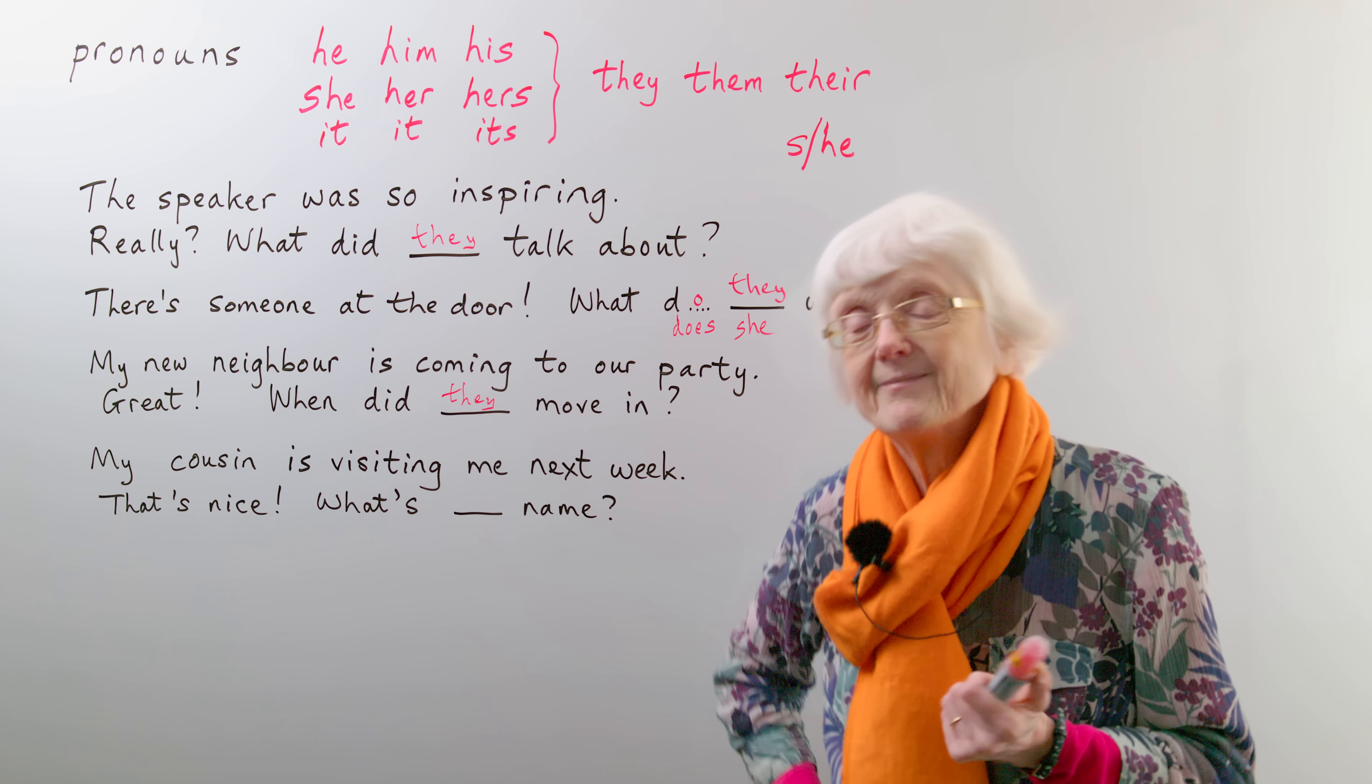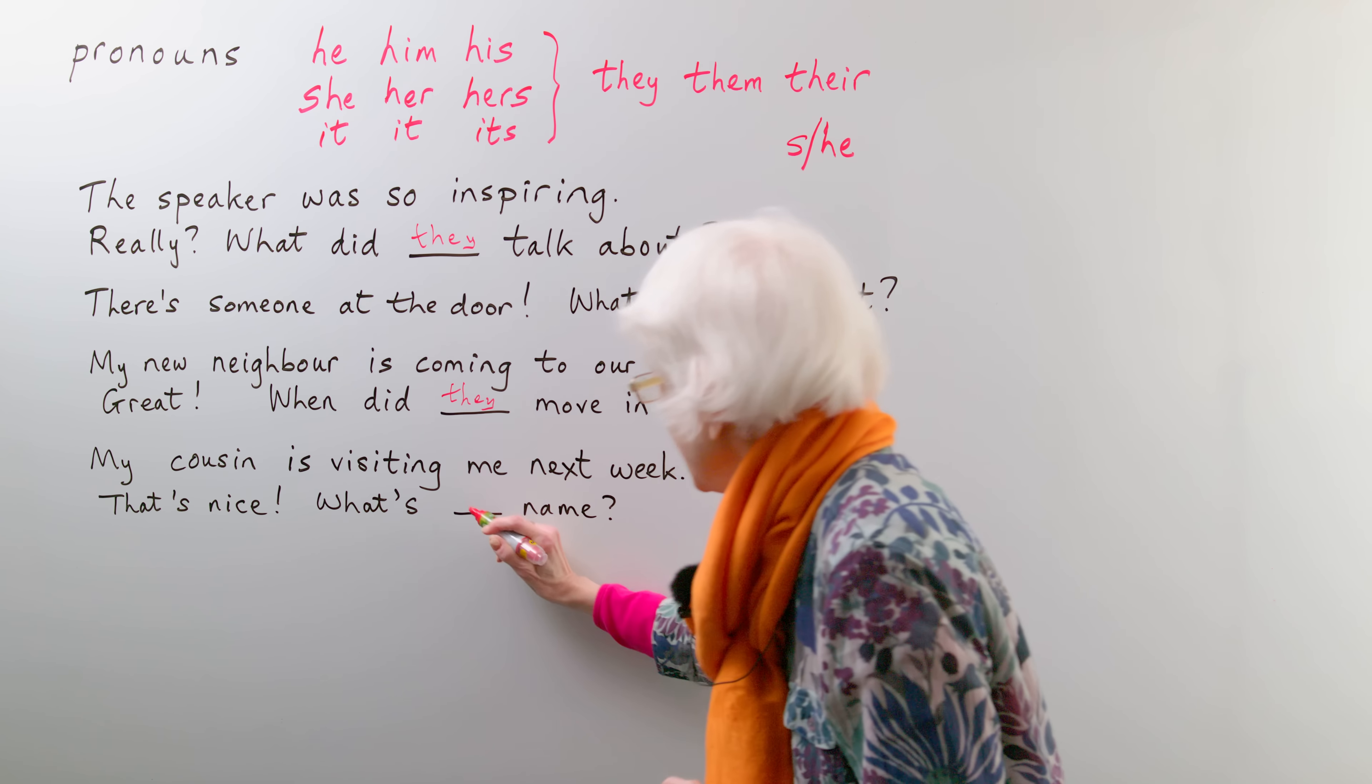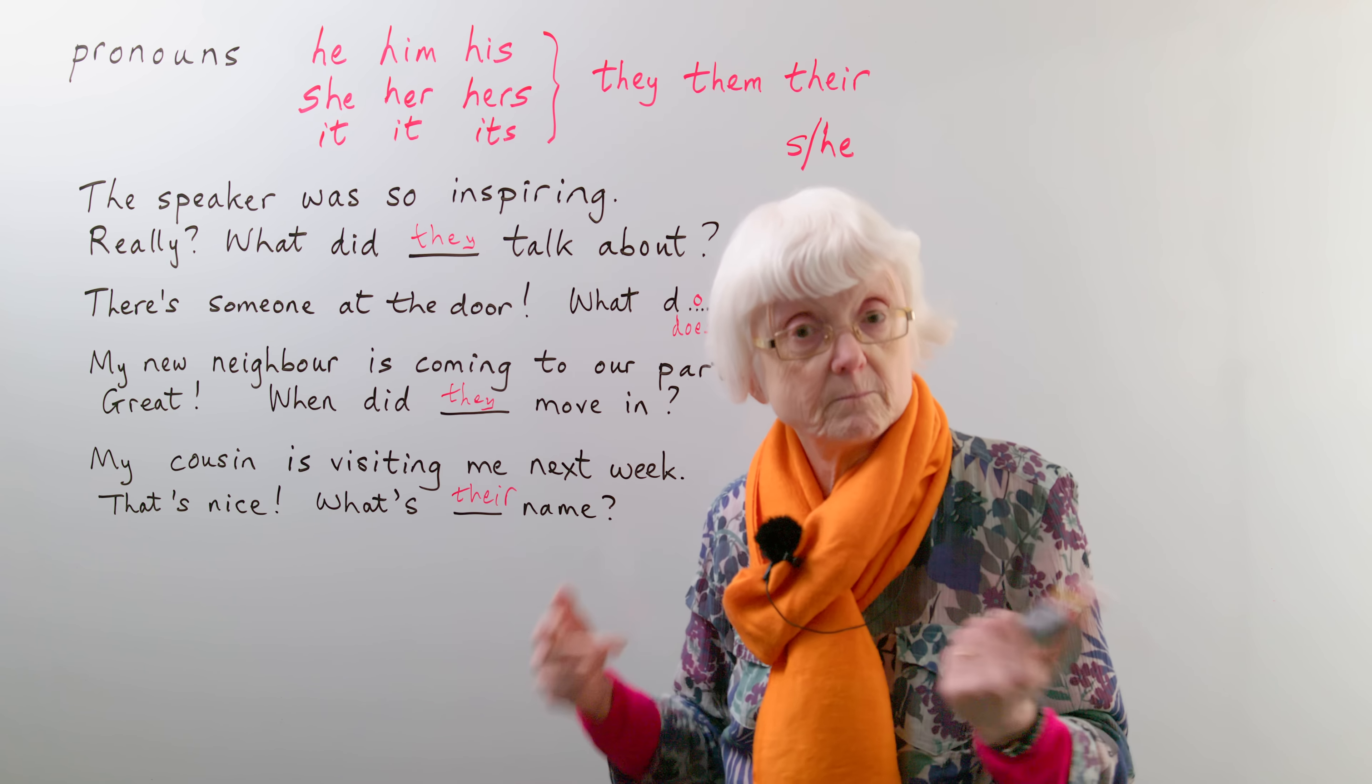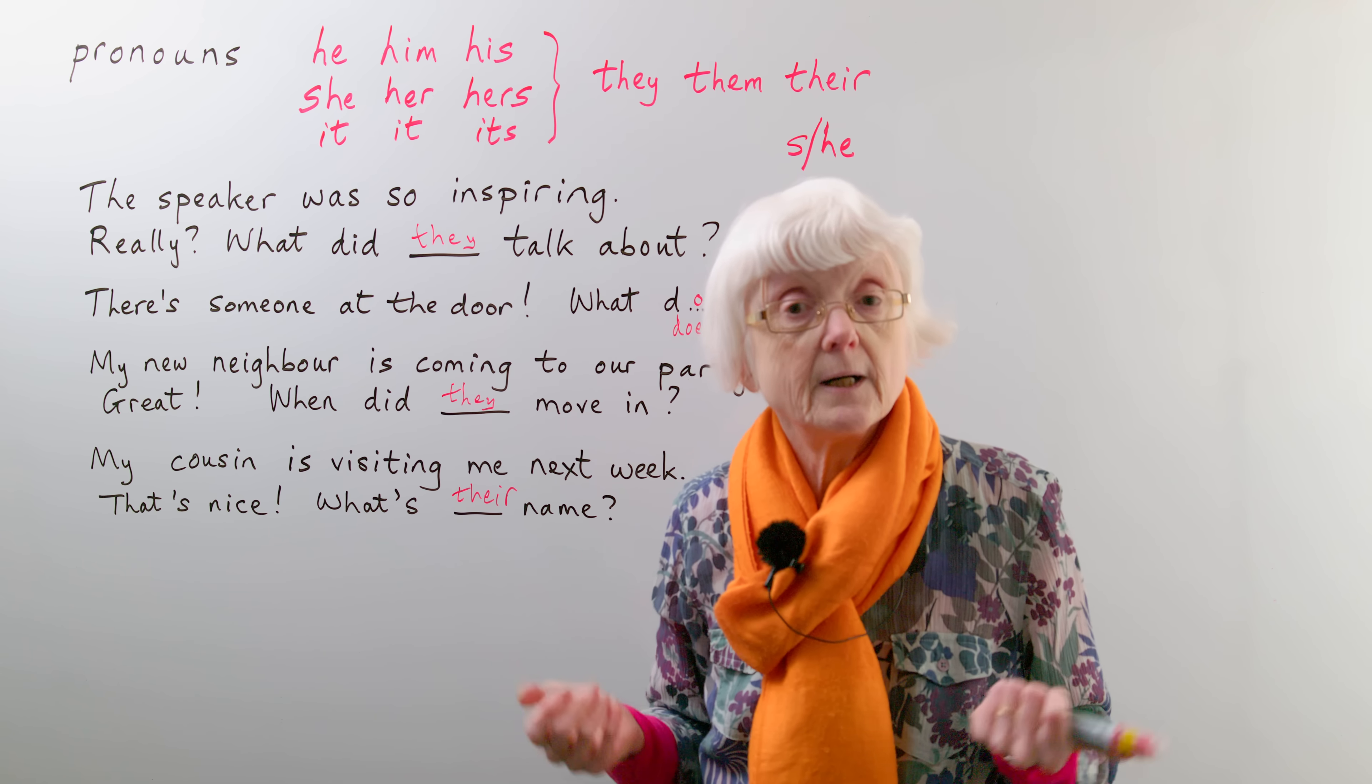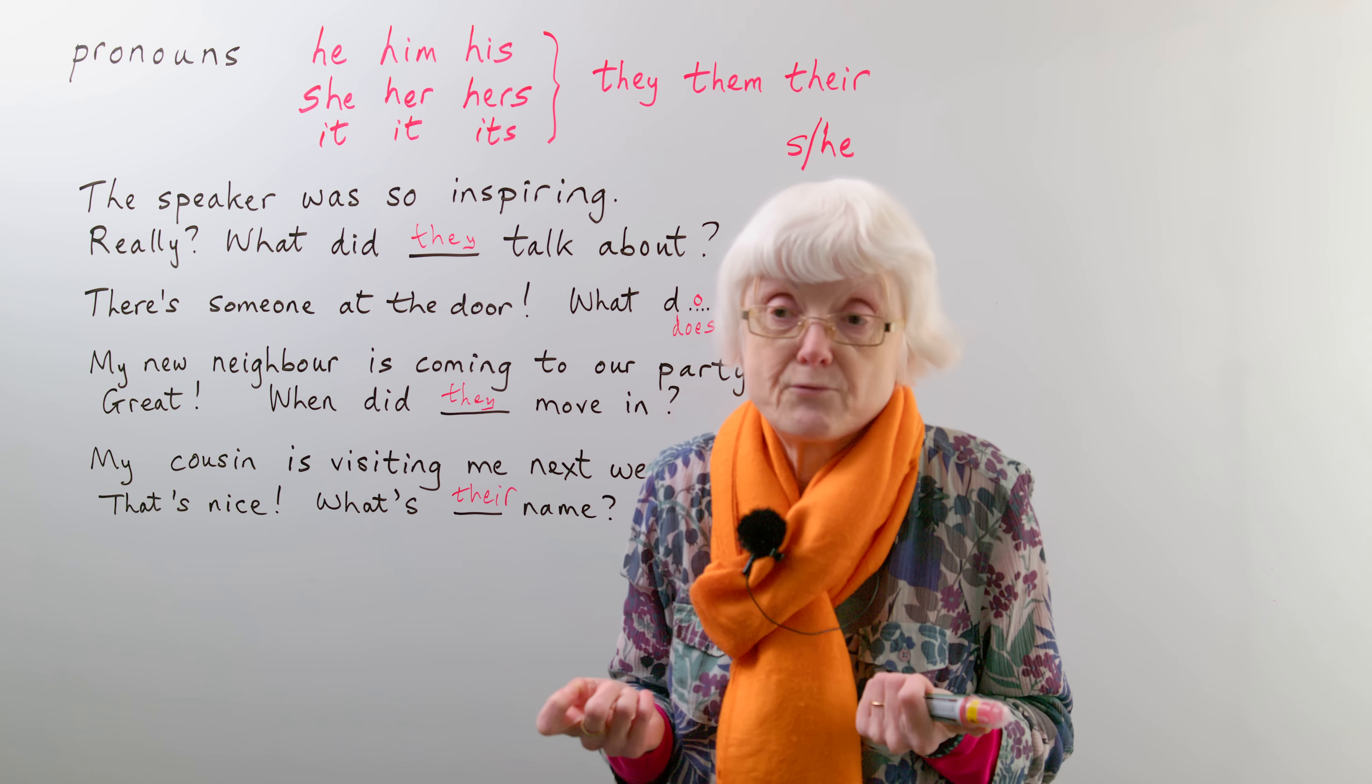So we've got to be non-gender specific. So we've got, but this time it's the possessive form, isn't it? So we've got to go for their... What's their name? You can't say what's his name, what's her name, because you don't know male or female. So what's their name? And it sounds okay because it's done in conversation. People have spoken like this for years now, and it's just accepted, even though some people don't like it. There's really no alternative.